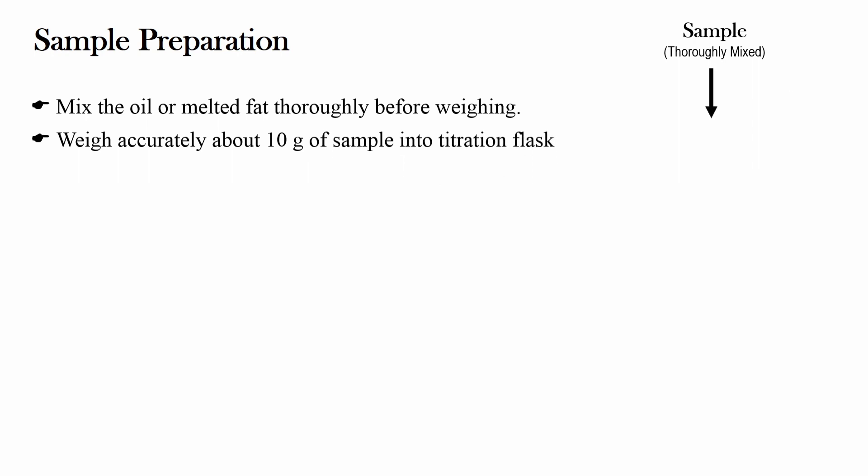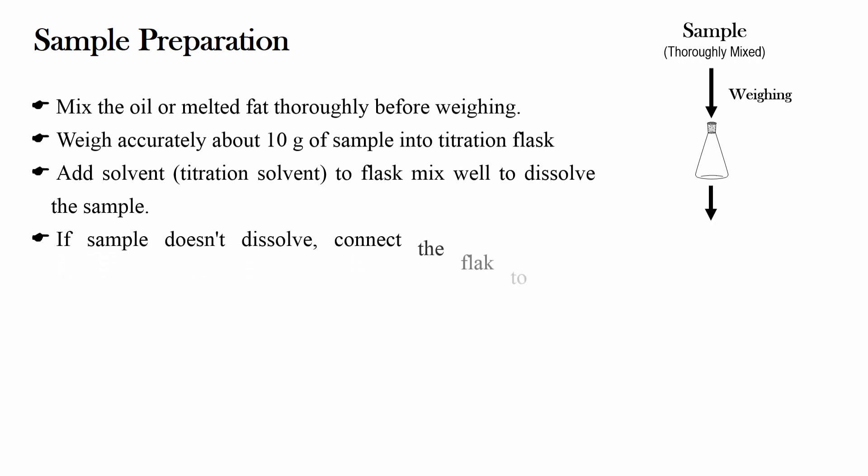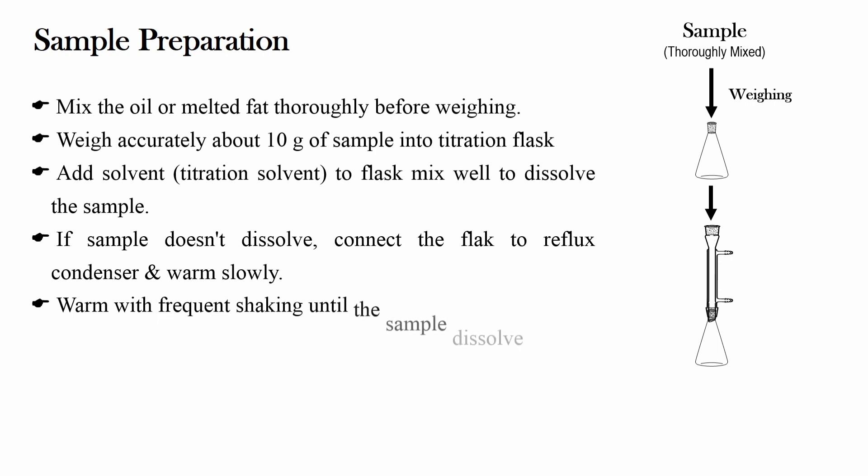Now coming to sample preparation. Mix the oil or melted fat thoroughly before weighing. Weigh accurately about 10 g of sample into titration flask. Add solvent that is titration solvent to the flask. Mix well to dissolve the sample. If the sample does not dissolve, connect the flask to reflux condenser and warm slowly. Warm with frequent shaking until the sample dissolves. Now cool the sample before titration.